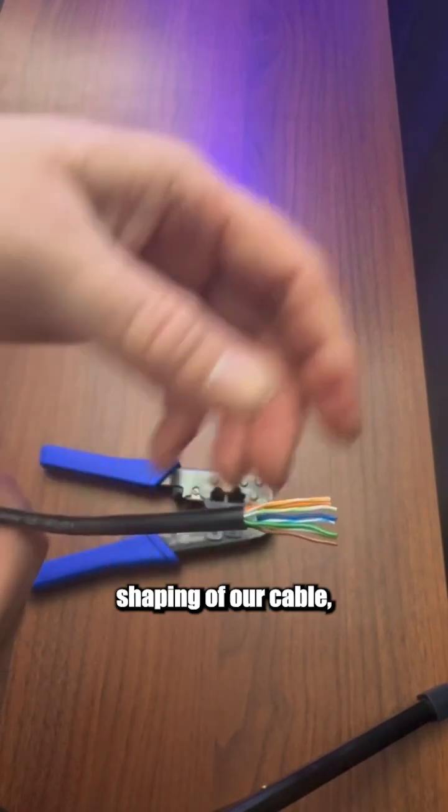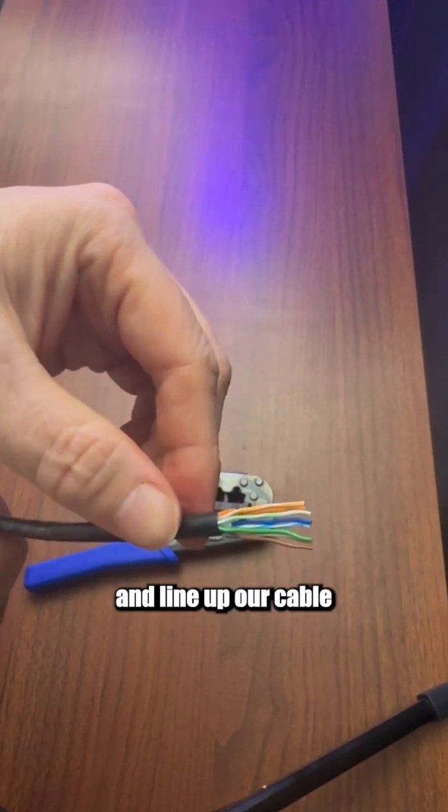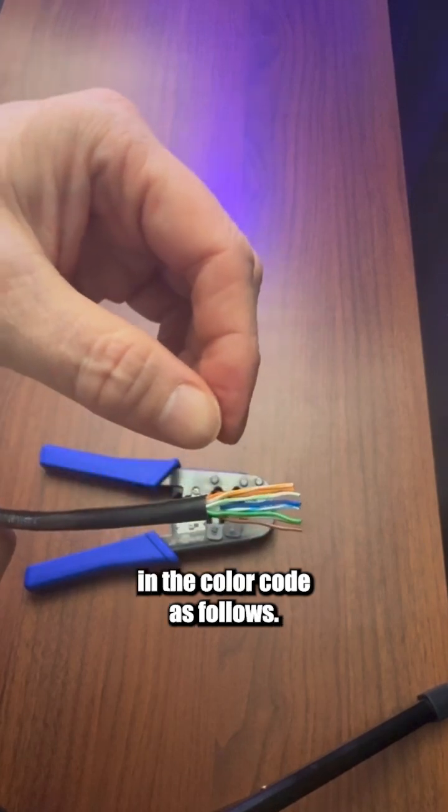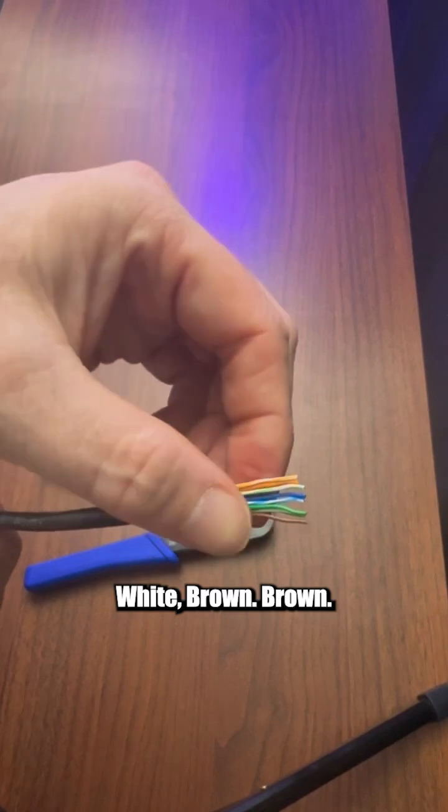Once we've pulled back the sheathing of our cable, trimmed out the plastic, and cut the horsehair ripcord, we're going to go ahead and line up our cable in the color code as follows. White-orange, orange, white-green, blue, white-blue, green, white-brown, brown.